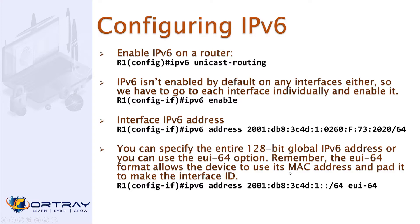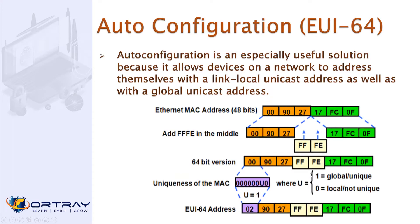If you configure EUI-64, the IP address will be a mix of the MAC address and the IPv6 prefix. The MAC address is 48-bit. In the middle — after the first three bytes — you insert FF:FE, which expands it to a 64-bit interface identifier, giving you the full EUI-64 format.